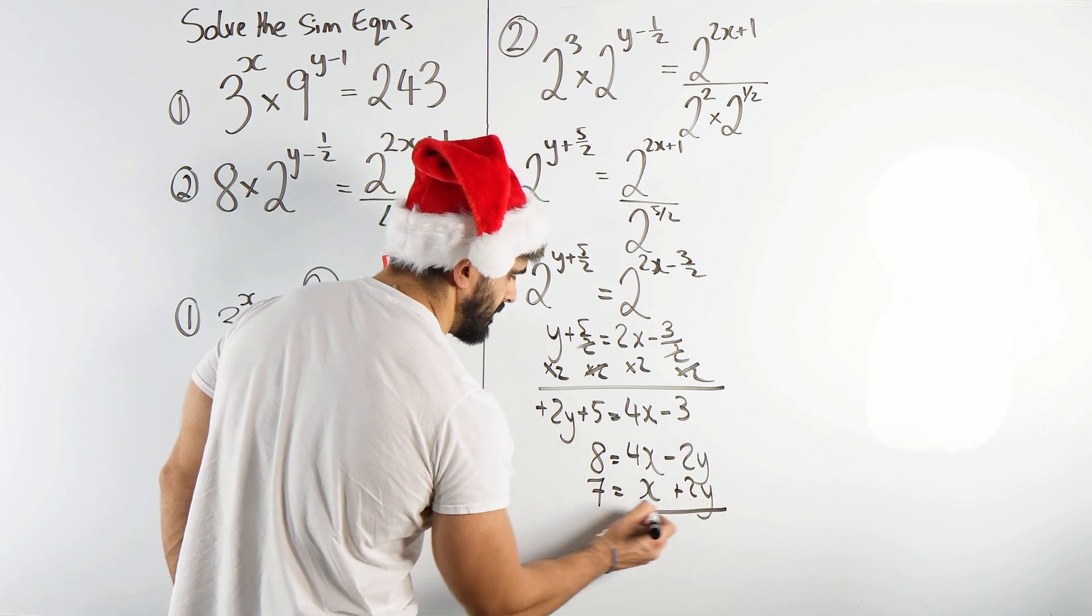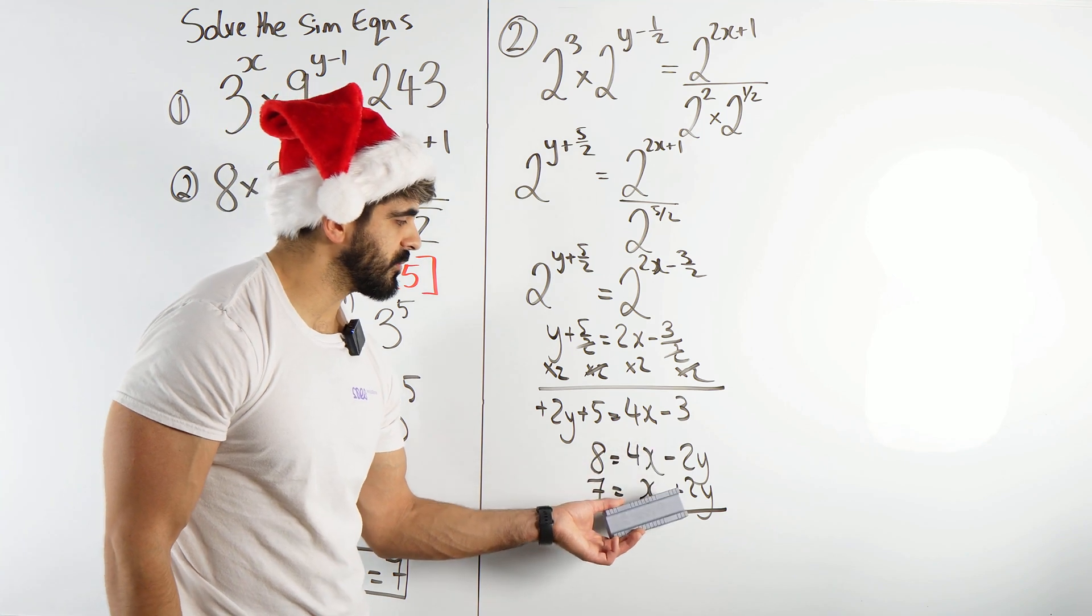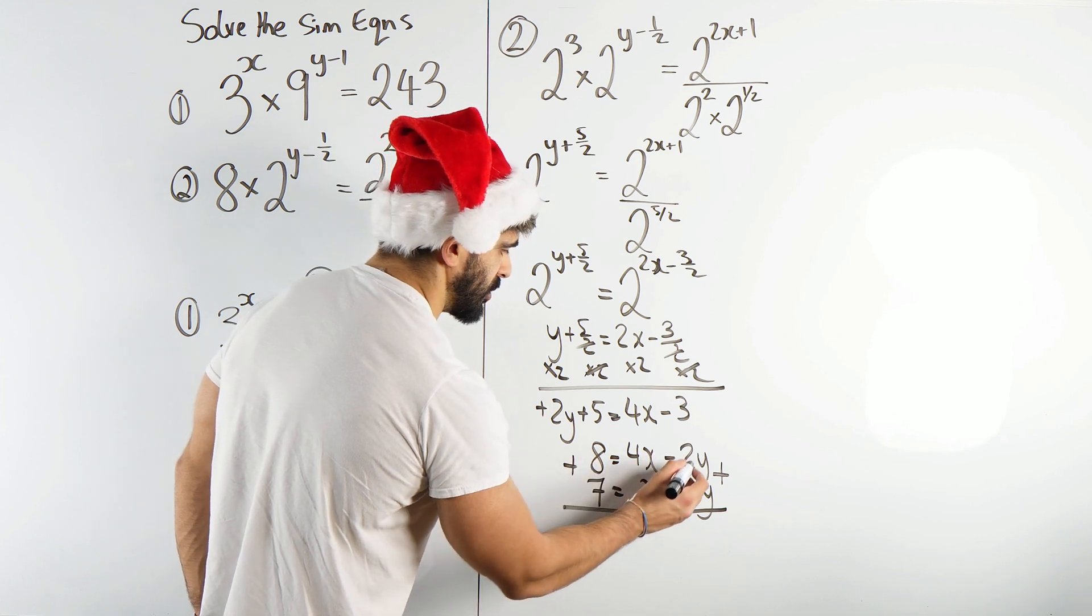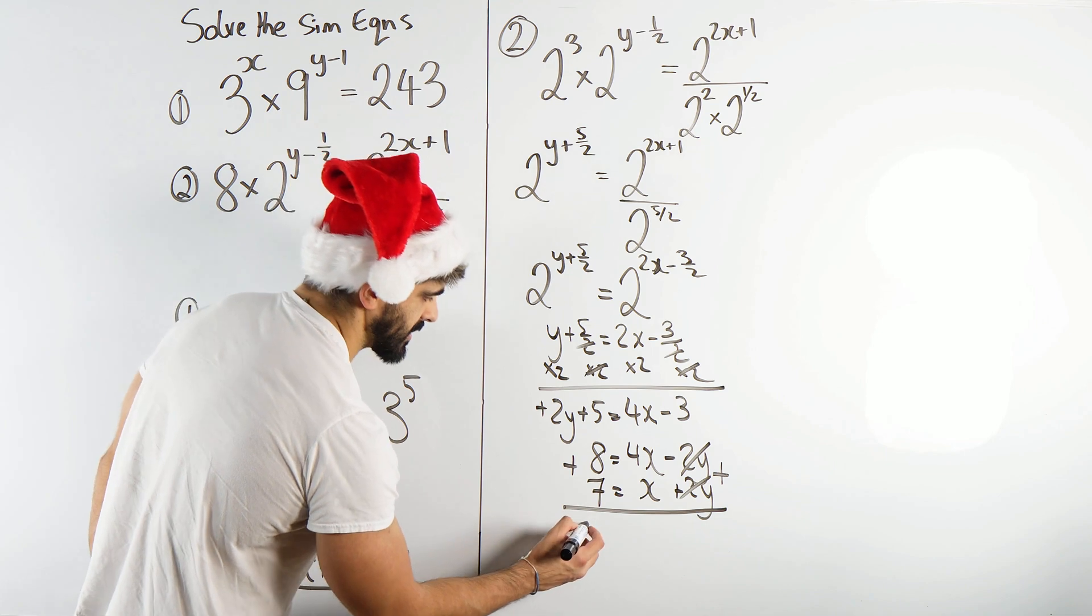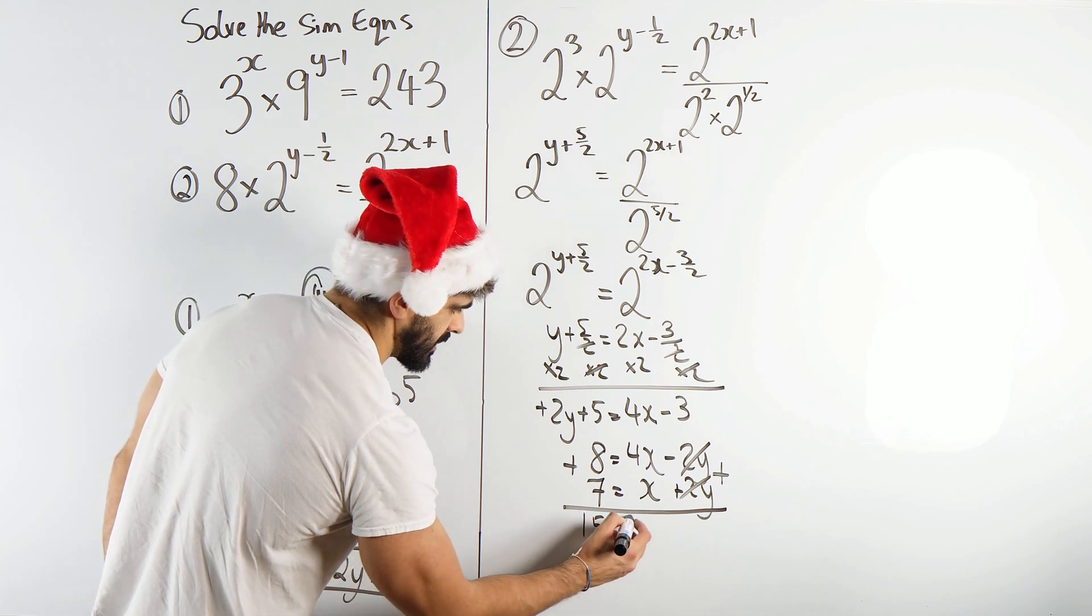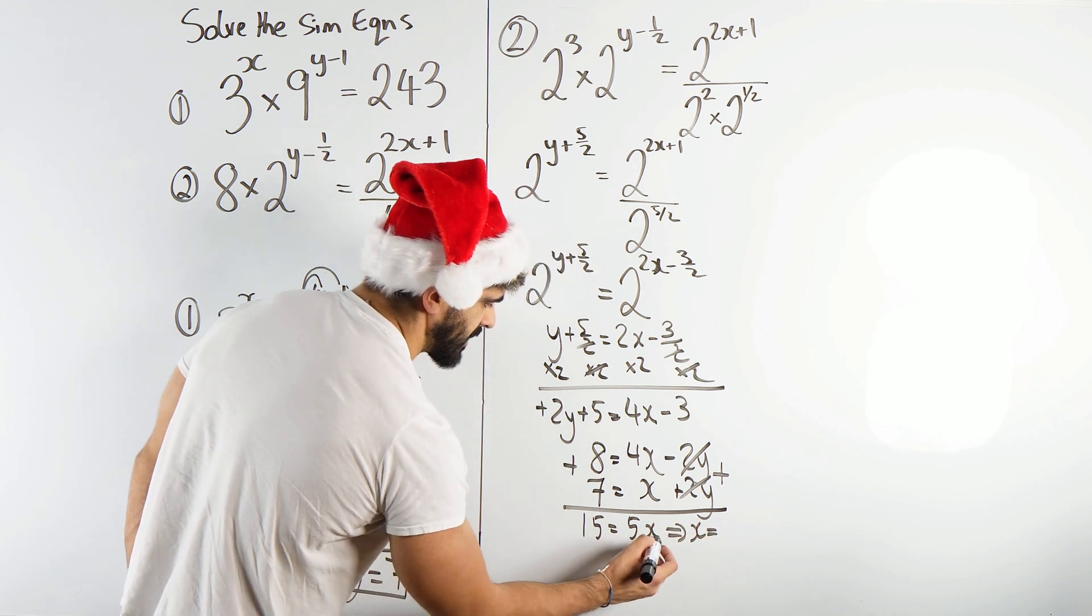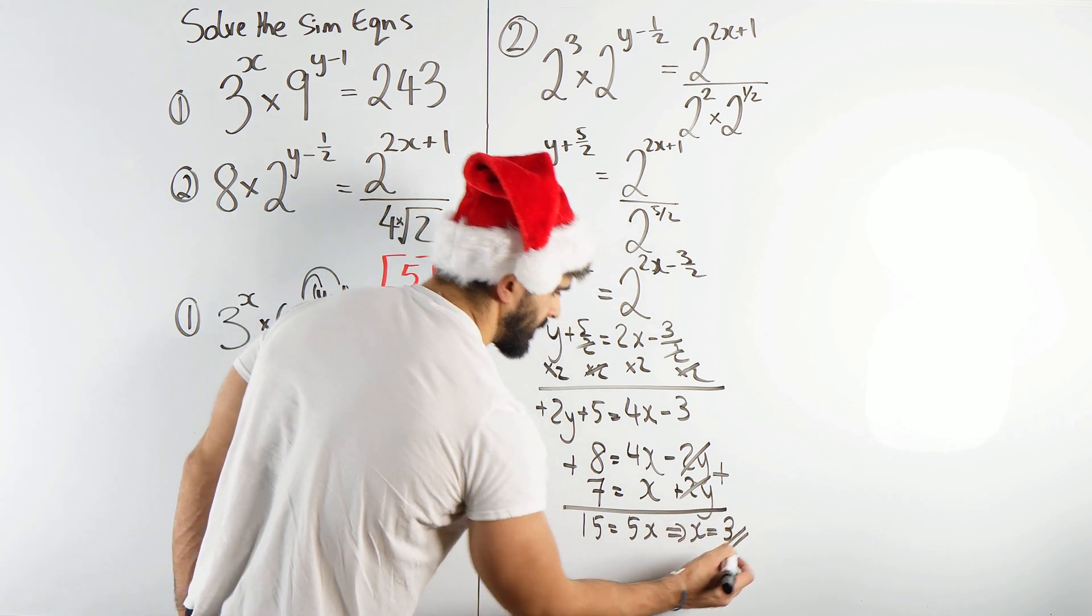Now the 2y's are the same, what do we need to do? When the y's are the same but one's positive, one's negative, we need to add them. Because minus 2 plus 2y cancels. So we're left with 8 plus 7, which is 15, is 5x. What does that mean x is? 5 times a number is 15. 5 times 3 is 15.